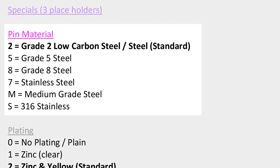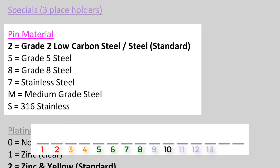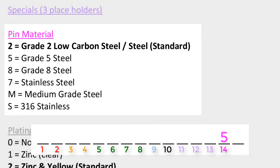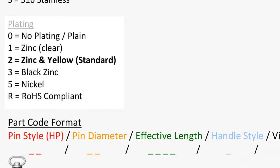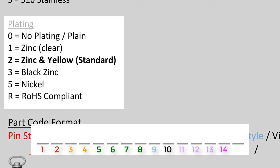Next, we move on to the fuchsia attribute called pin material. This section regards what type or grade of material the pin is made out of. We allocate one space in space holder number 14 for the material of the pin. Common materials are listed out. The standard steel or grade 2 steel becomes a 2 in a part code, whereas a grade 5 steel becomes a 5 in a part code.